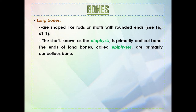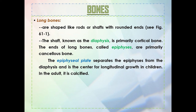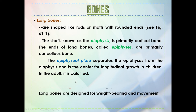Let's dive deeper into the different types of bones. Long bones are shaped like rods or shafts with rounded ends. The shaft is known as the diaphysis, which is primarily cortical bone, making it strong. The ends of long bones are called the epiphysis, which is primarily cancellous or spongy bone. The epiphysial plate separates the epiphysis from the diaphysis and is the center for longitudinal growth in children. In adults, it is calcified.